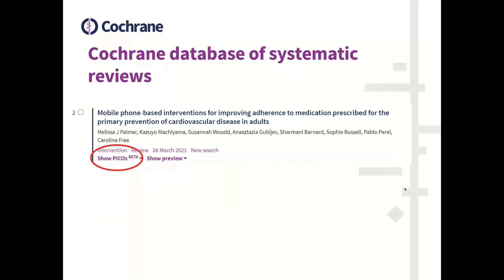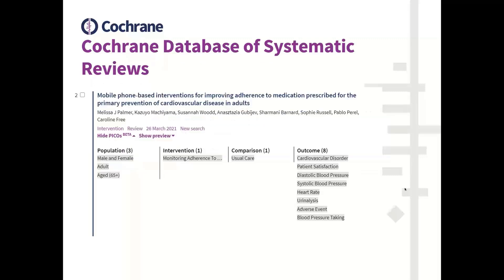You may have noticed recently when searching on the Cochrane Database of Systematic Reviews on the Cochrane Library that you can now view the PICOs for each interventional review. As you can see here on the screenshot, the PICO is automatically collapsed. However, you just need to click on it and it'll expand, and you can view how the review has been described within each PICO component.